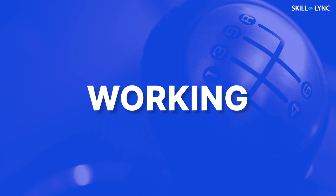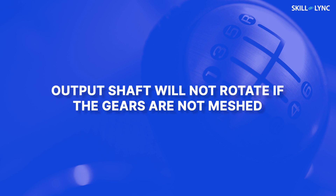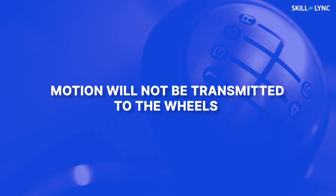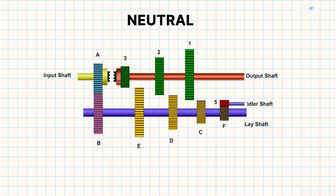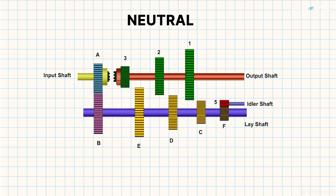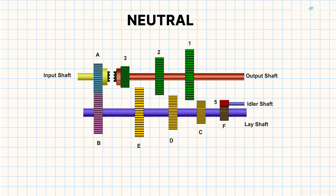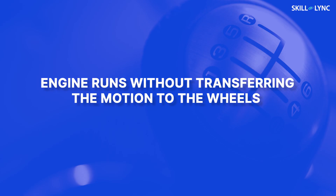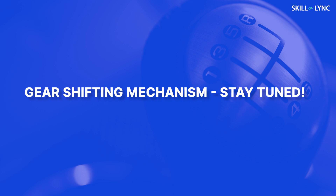Now, let us move on to see how this works. Unless and until the output gears mesh with others, the output shaft will not rotate. That is, the motion will not be transmitted to the wheels. But when the input shaft rotates, the lay shaft rotates as well, because of the constant meshing of gears. This is said to be the neutral position and it permits the engine to run without transferring the motion to the wheels. Then, the driver operates the gear lever which is connected to a mechanism for shifting gears. We will discuss that in a separate video.